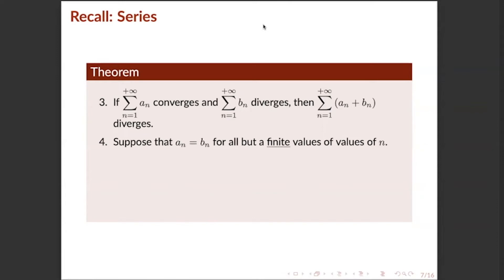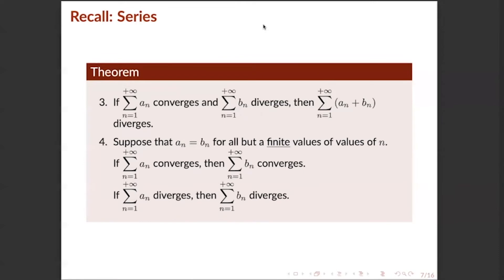Number four: suppose that a_n equals b_n except for a finite number of values of n — meaning the terms of a_n and b_n are almost the same except for some terms. Then if a_n is convergent, b_n is convergent. Note that their sums are not always equal since not all terms of a_n appear in b_n or vice versa. Similarly, if a_n is divergent, then b_n is also divergent.